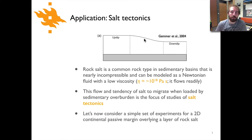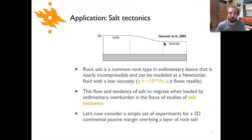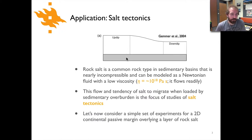The figure here shows a cartoon version of the earth capturing the essence of salt tectonics. We have a slice through the transition from the continent and the continental shelf, down the continental margin — a passive margin — going down to the ocean floor and the abyss. Beneath a pile of sediment shown here is salt in gray, which is rock salt, common in sedimentary basins. It is nearly incompressible and behaves close to a Newtonian fluid with a viscosity of 10 to the 18 pascal seconds, meaning it flows readily.